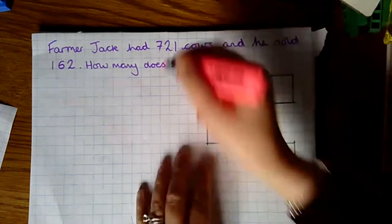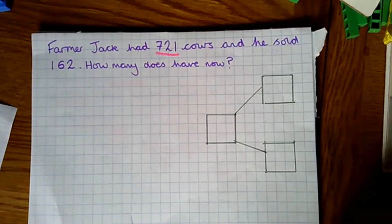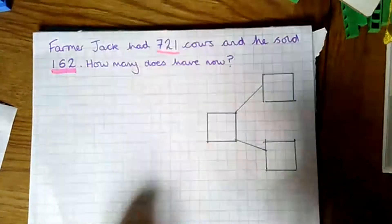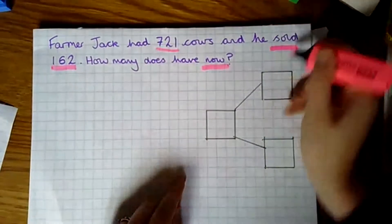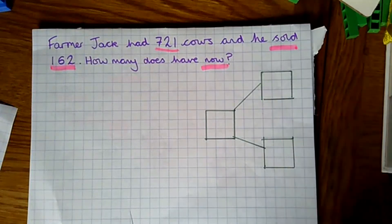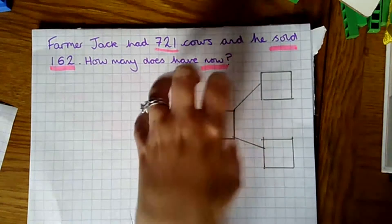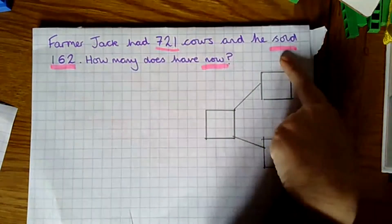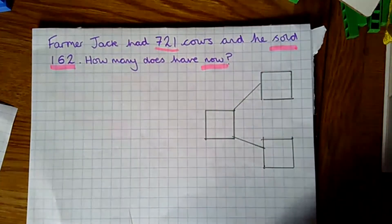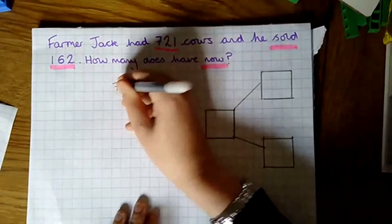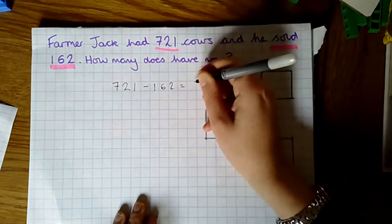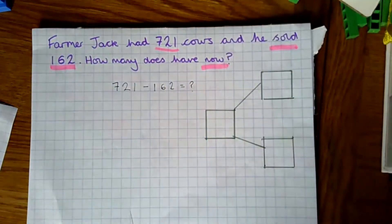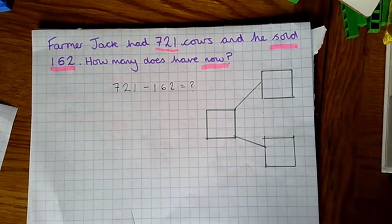Farmer Jack had 721 cows and he sold 162 — how many does he have now? So that's my key information: my two amounts. The word 'sold' is important because if you sell something you don't have it anymore, so it's subtraction. We want to find out how many he has right now after selling the 162. So I'm looking at 721 cows and subtracting 162 cows. Think quickly: how do we put this in our part-part-whole model, and what do we know and what don't we know?